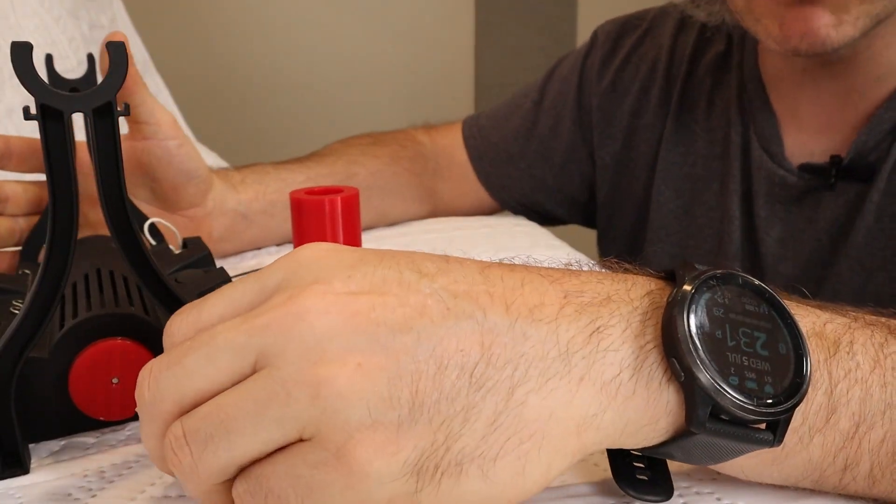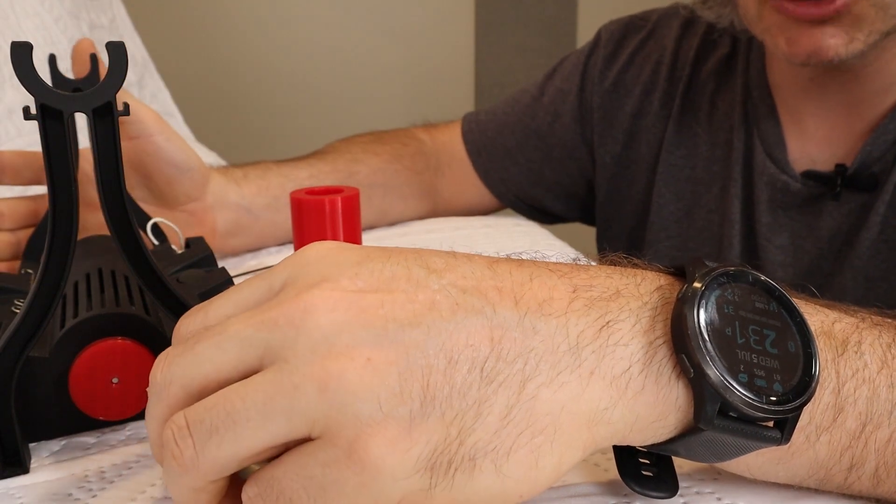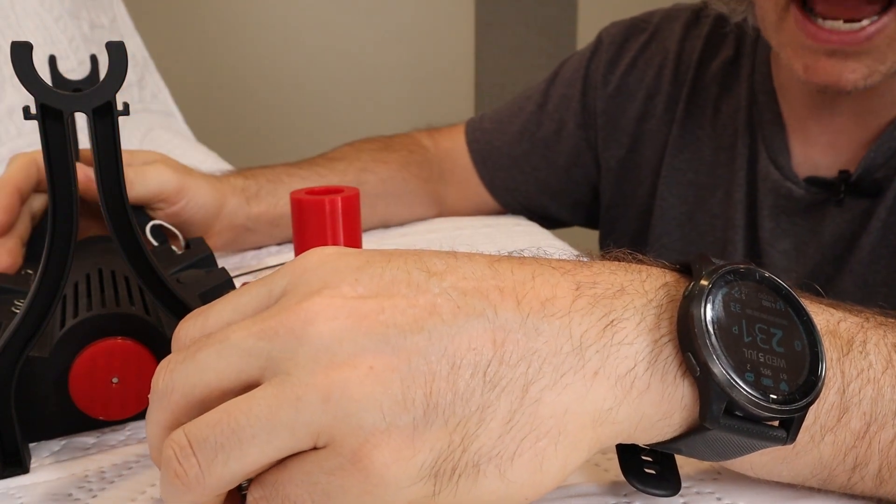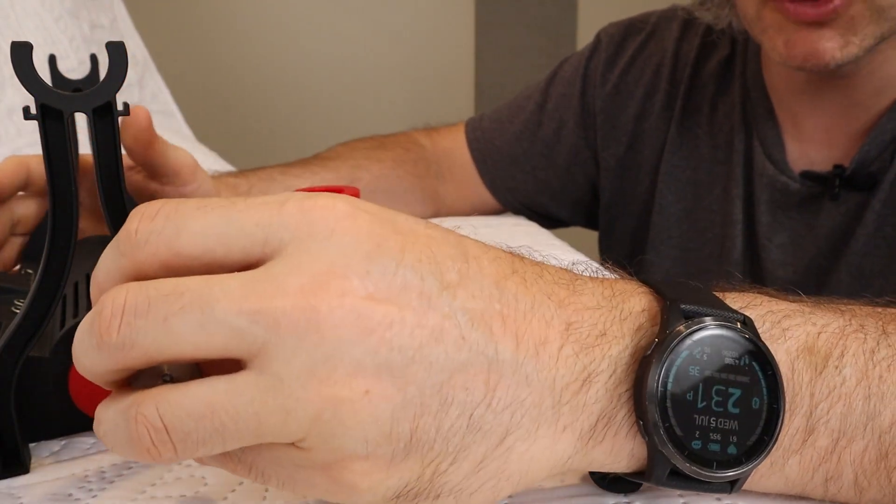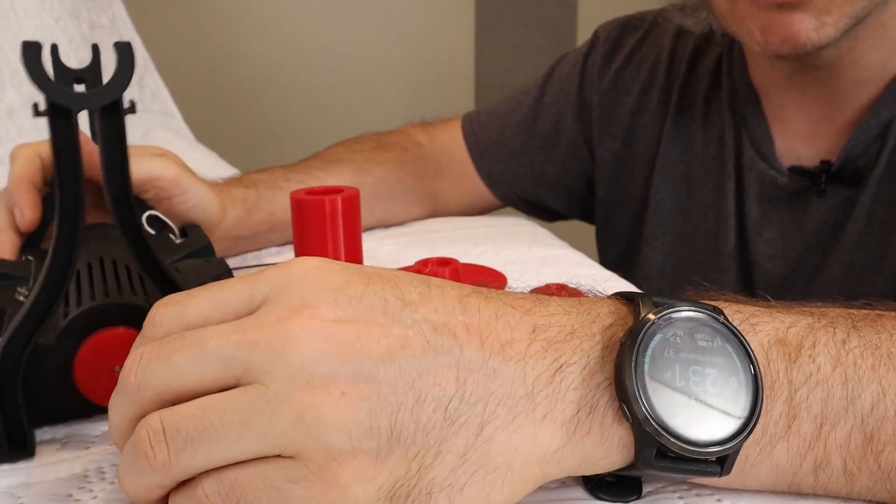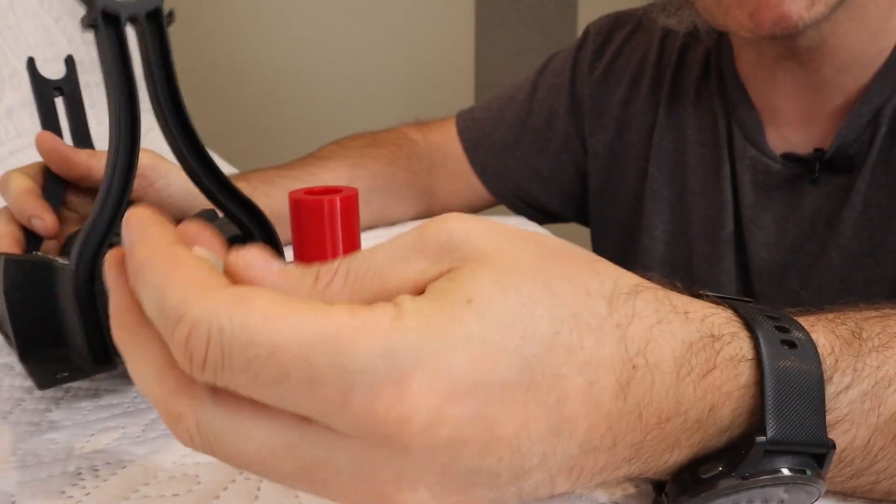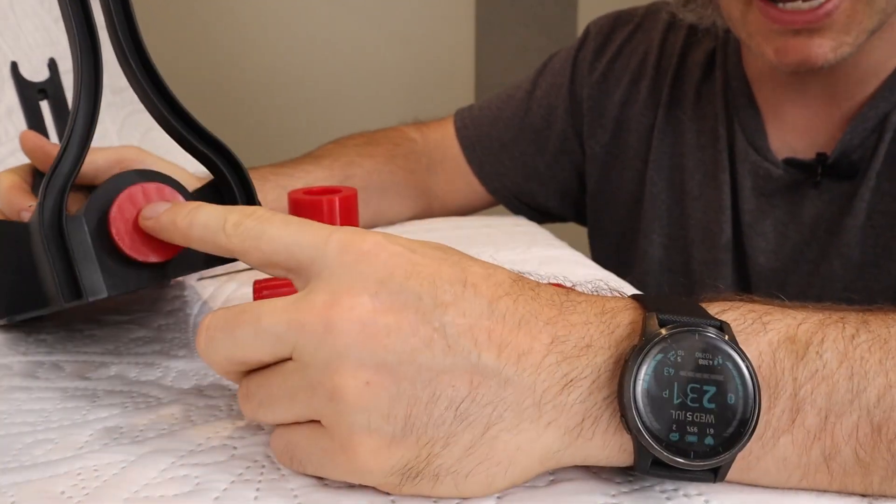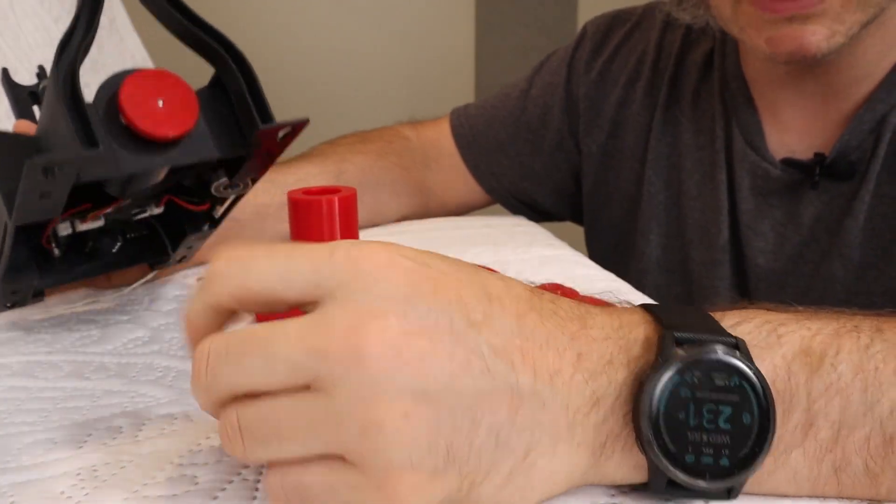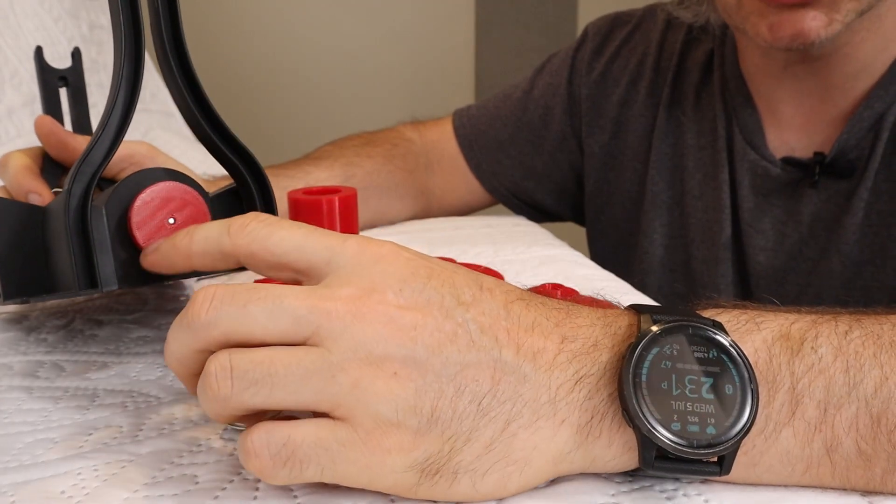And the reason you want to go faster for lace weight yarn is you're adding a lot of twist. And to add a lot of twist, it goes faster if you spin the flyer faster. Now a lot of people don't need extra speed. And if you don't need the extra speed, I would just leave this metal pulley on and not go to the extra hassle of putting this larger one on.